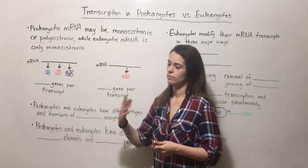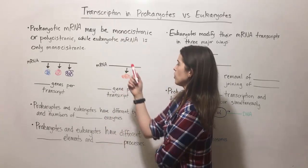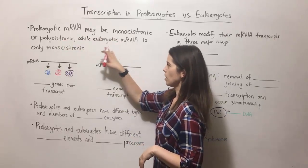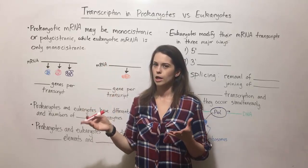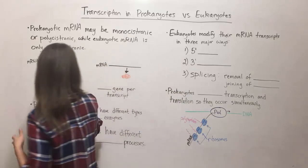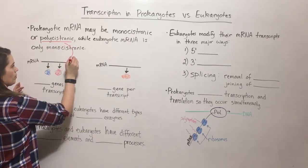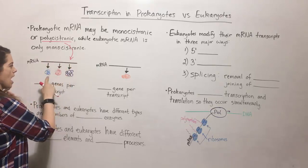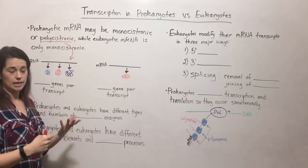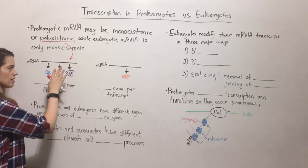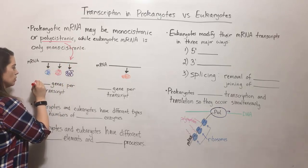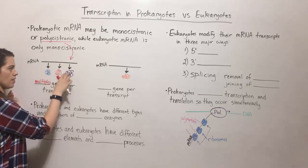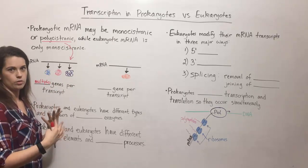Prokaryotic mRNA may be monocistronic or polycystronic, while eukaryotic mRNA is exclusively monocistronic. Polycystronic is where you've got one mRNA transcript — that's the black line here — and multiple polypeptides, or multiple proteins, are made from that one transcript because there are multiple genes per transcript. So you can have multiple genes represented on a transcript and then multiple polypeptides coming from that. Polypeptides and proteins, we can use those words interchangeably.